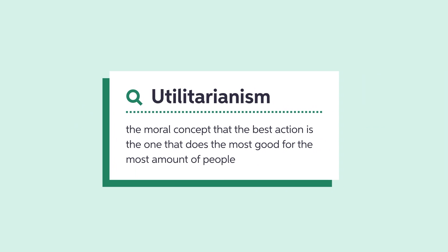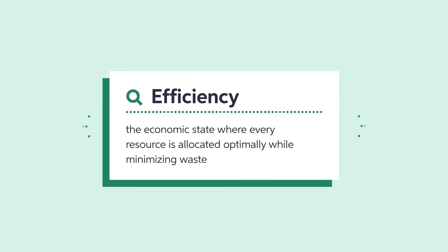Economists often use the principle of utilitarianism in their work — the idea that we should strive to do the greatest good for the greatest amount of people. In economics, we define efficiency as the economic state where every resource is allocated optimally while minimizing waste. In other words, we should be efficient. Sometimes, however, it means that certain people do not benefit.